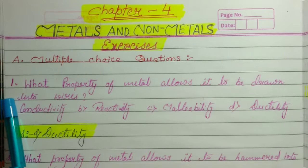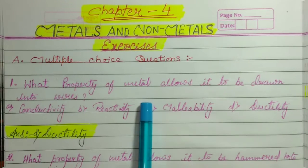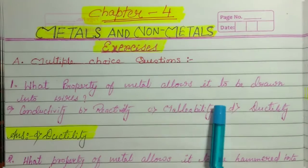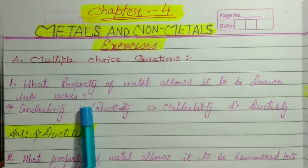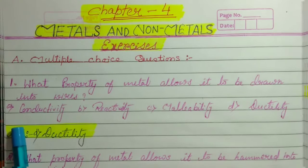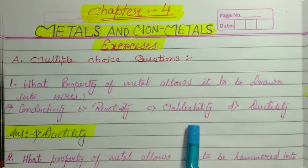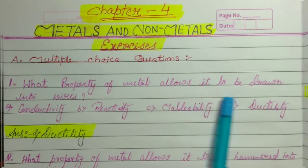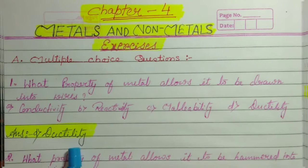Number 1: What property of metal allows it to be drawn into wires? The options are conductivity, reactivity, malleability, or ductility. The answer is ductility.